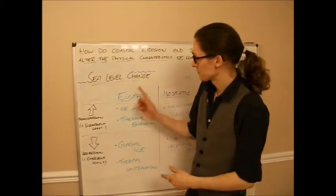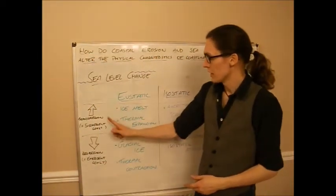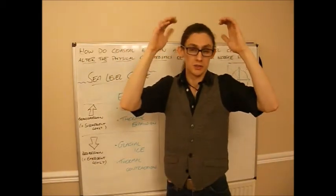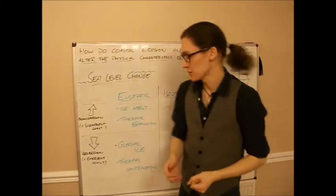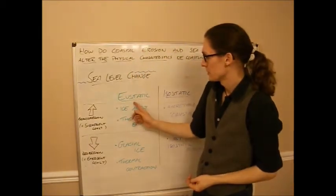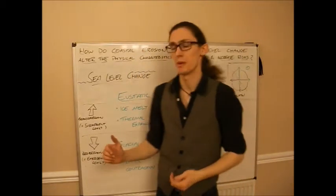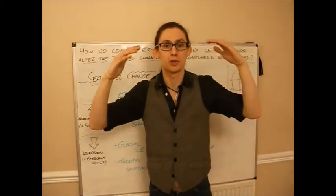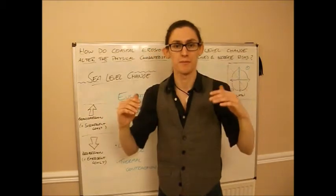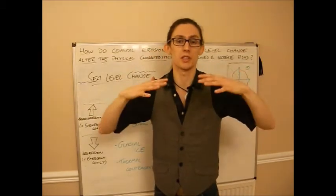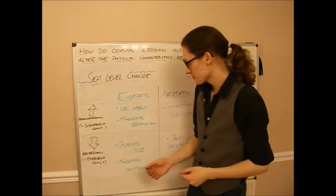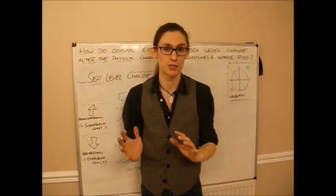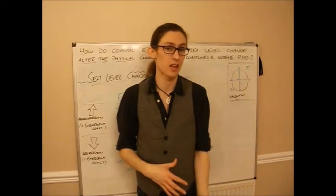On a submergent coast, where the sea level is rising relative to the land, we think about ice melt. Ice is melting from glaciers, filling up the oceans, so there's more water. All the continents are going to experience some sea level rise. That accounts for about 40% of sea level change and it's what's happening at the moment with climate change.